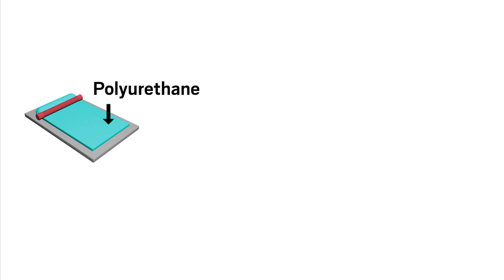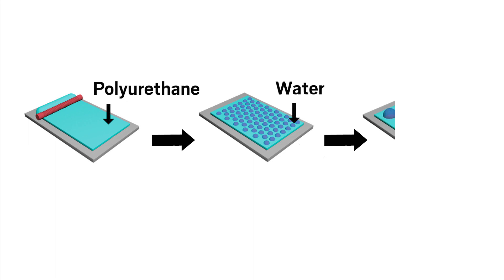The process starts with spreading a thin layer of thermoplastic polyurethane dissolved in organic solvent on a glass surface. This layer is placed inside a high humidity chamber, where water droplets form and deposit. These droplets push aside the polymer solution and then evaporate to leave behind pores.